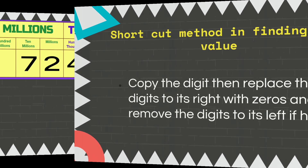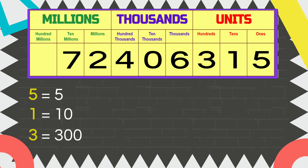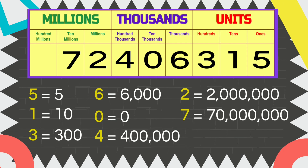Now, let's try to get the value of this number: seventy-two million four hundred six thousand three hundred fifteen. Starting from the rightmost digit: the value of five is five, one is ten, three is three hundred, six is six thousand, zero is zero, four is four hundred thousand, two is two million, seven is seventy million. As you can see, even if zero is in the ten thousands place, the value is still zero.